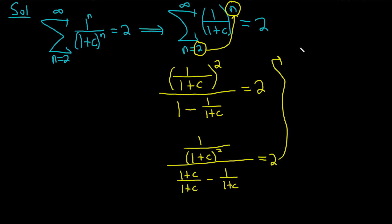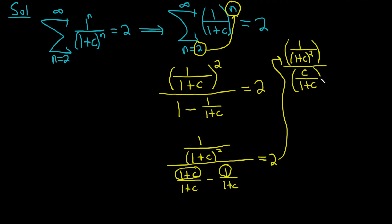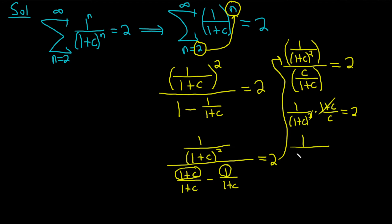So we'll have 1 over (1 + c)^2 divided by — in the denominator (1 + c) minus 1, so the ones cancel, and we have c over (1 + c). We have to be really careful in this step. Whenever you have fractions over fractions it gets messy. When you divide a fraction by another fraction you multiply by the reciprocal. So this is 1 over (1 + c)^2 times (1 + c)/c, equal to 2. Multiplying by the reciprocal, we get 1 over (1 + c) · c, equal to 2.